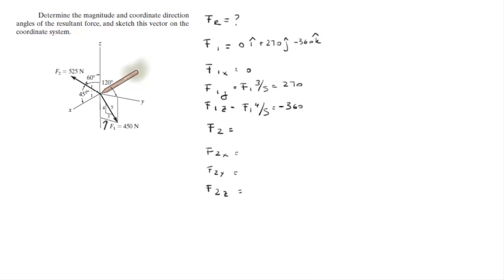But we're given the direction angle, so what you have to do is multiply the magnitude of F₂ by the cosine of the direction angle. For the x it's 45 degrees, for the y it's 120 degrees, and for the z it's 60 degrees.